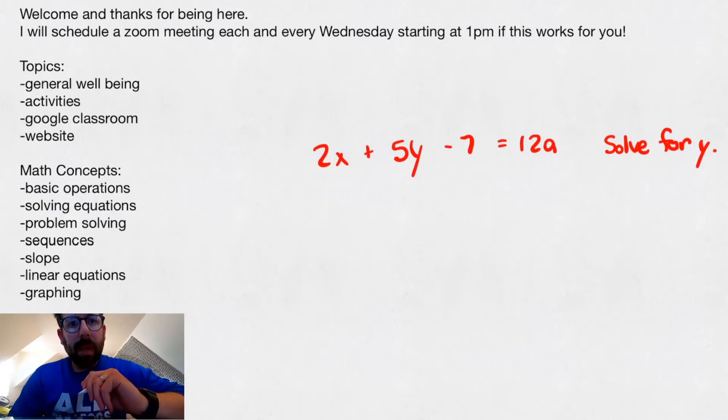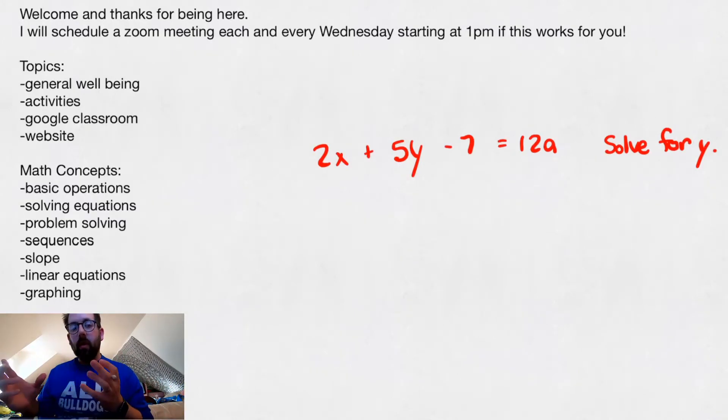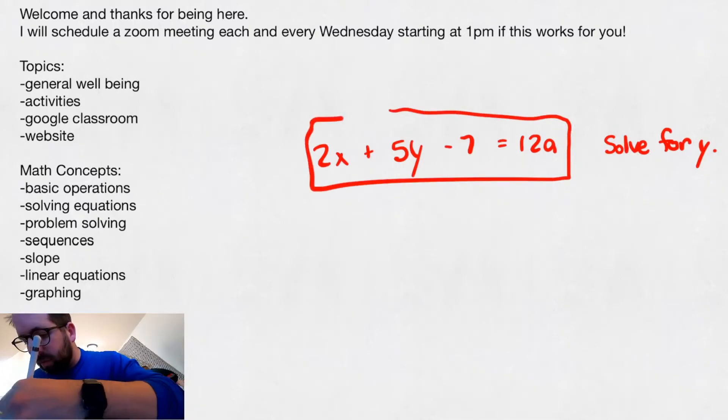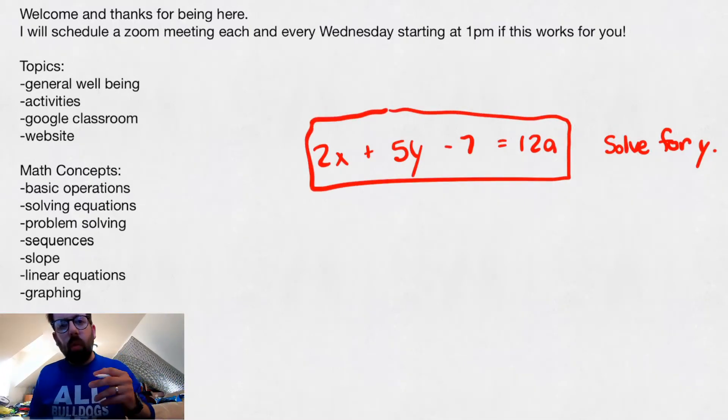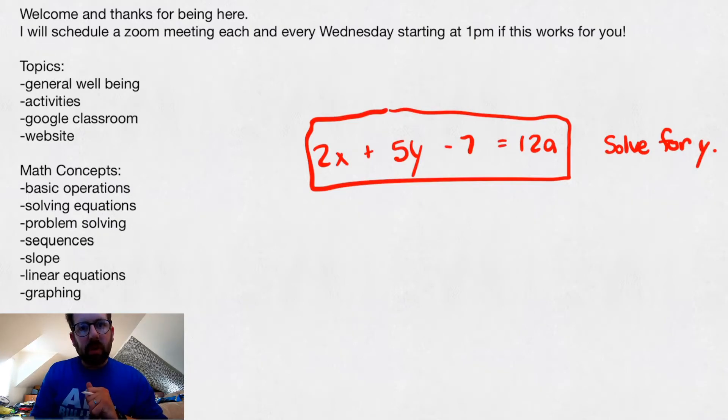So that means you want to get y by itself. The order of operations that we have that helps us rearrange equations, this is an equation, it has an equal sign, this is the original problem. You want to add and subtract things across first. Basically what I always think of is you want to move everything that doesn't have a y to the right side and leave the y's on the left side.